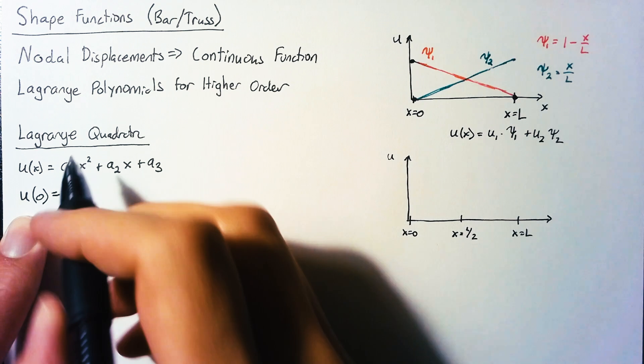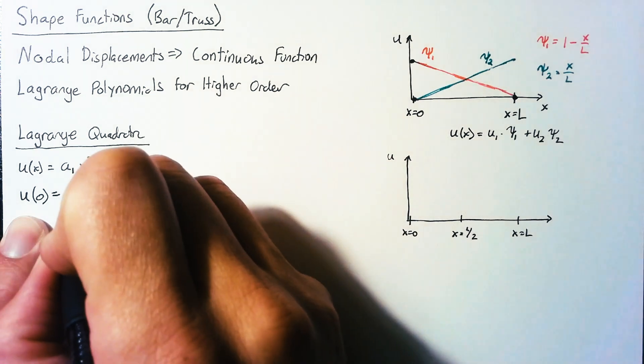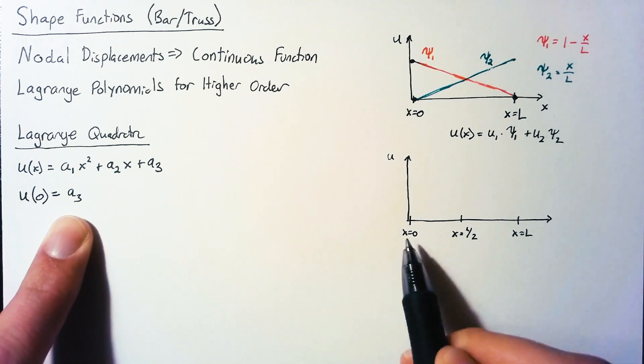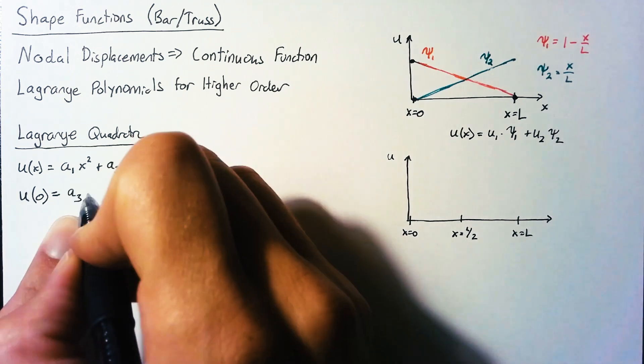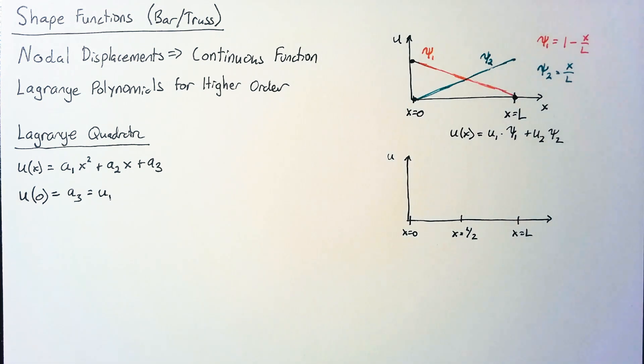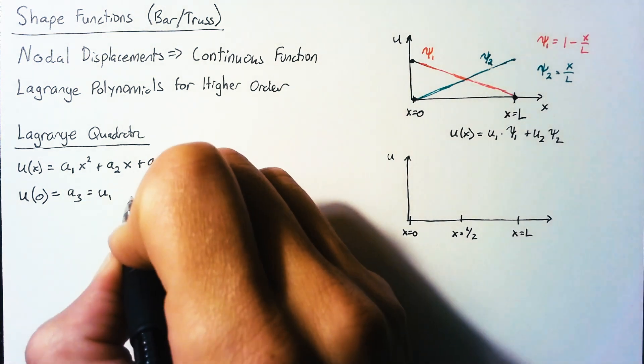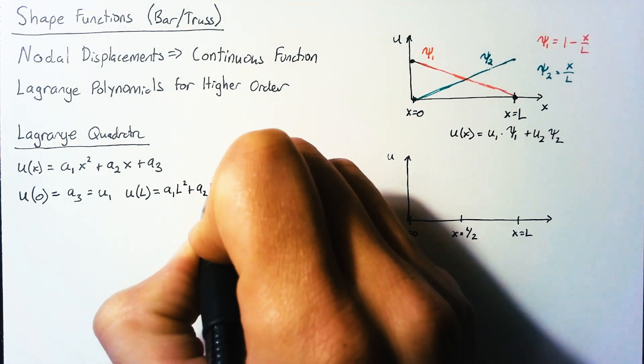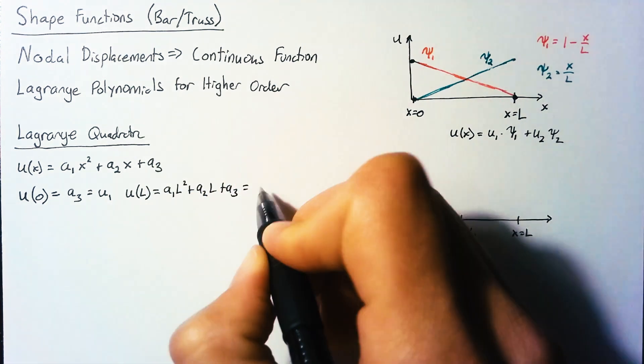At x equals 0, that's just going to be equal to a3 according to our function, and according to our definitions, it's going to be equal to u1, our first displacement. At the other end, u of l, we just plug that in, and that will be equal to u3, our third node.